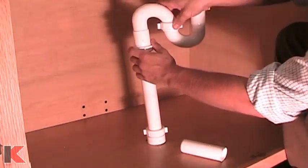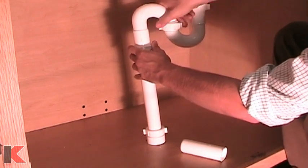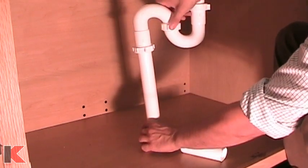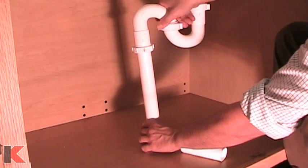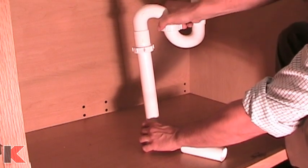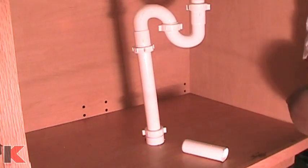Reattach the two J-bends together by hand tightening the captured nut. Do not solvent weld any parts until all parts have been test assembled.